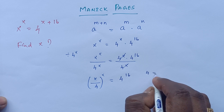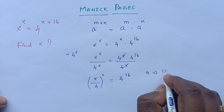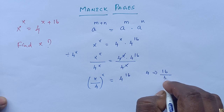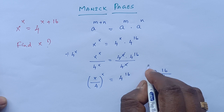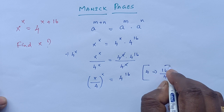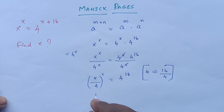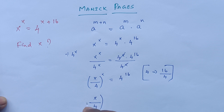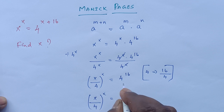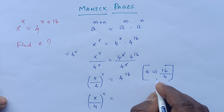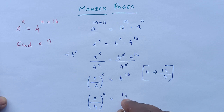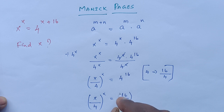We can write 4 as 16 divided by 4. So applying this, (x/4) raised to the power x is equal to (16/4) raised to the power 16.